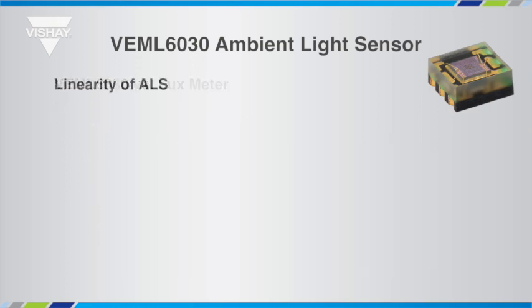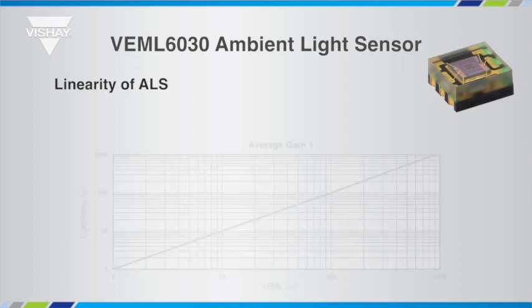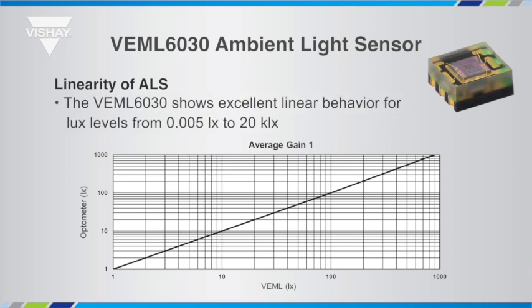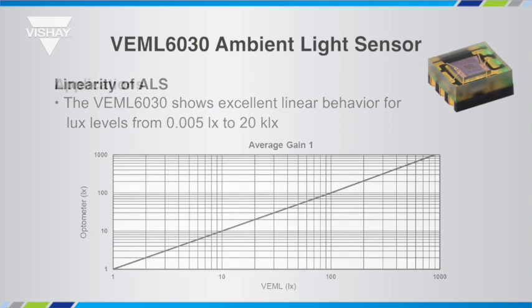The output of an ambient light sensor should also be linear, so as it gets brighter the output or number of counts stays consistent. The VEML6030 has excellent linearity to 20 kilolux and beyond.